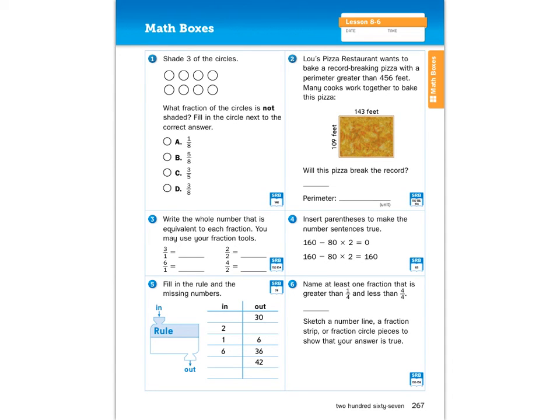So here we go. Number one, shade three of the circles. What fraction of the circles is not shaded? Fill in the circle. That means there's going to be one circle you fill in next to the correct answer. Number two, Lou's pizza restaurant wants to bake a record breaking pizza with a perimeter greater than 456 feet. Many cooks work together to bake this pizza. Will this pizza break the record? This is a huge pizza. Now the thing we have to remember is what does perimeter mean? I'll give you a reminder about perimeter. Perimeter is like the fence around the yard. So if we have these measurements, will the pizza break the record? Will it have a perimeter greater than 456 feet? And then you're going to put yes or no and then perimeter along with the unit here.